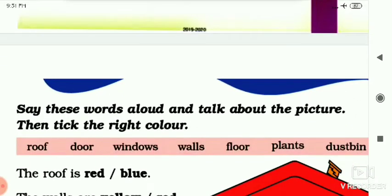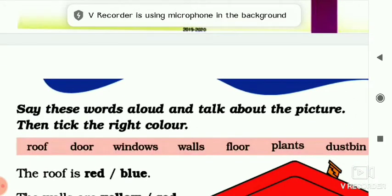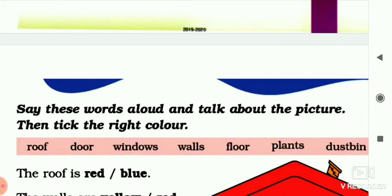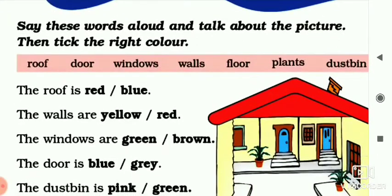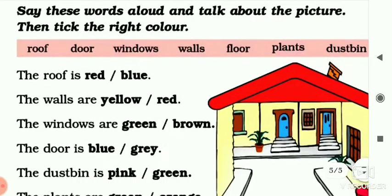Next, say this word aloud and talk about the picture, then take the right color. Here is a picture and you have some words: roof means chat, door means darwaza, window means khidki, wall means deewar, floor means farsh, plants means paudhe, dustbin means koodaadan.